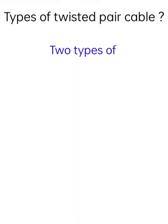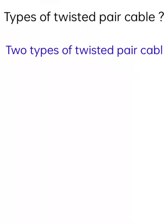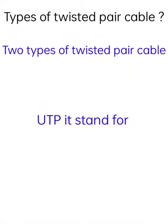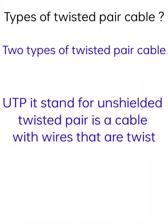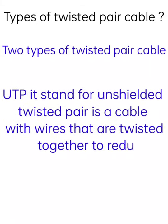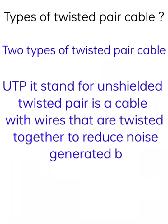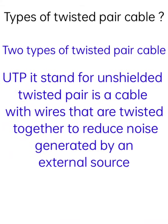Types of twisted pair cable. First one is UTP. It stands for Unshielded Twisted Pair — a cable where wires are twisted together to reduce noise generated by an external source.